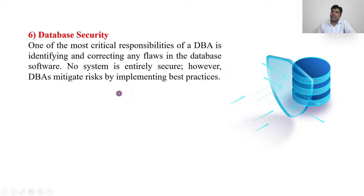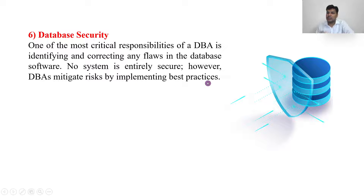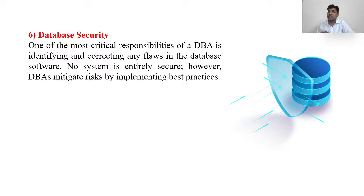Database security: the DBA identifies and corrects any flaws in the database software. No system is entirely secure; however, the DBA takes risk mitigation steps by implementing best practices. He will try to recognize unrecognized sites, or when a different user is trying to access from a suspicious location — he will shield the database by not giving access to unrecognized people or unrecognized IP addresses. That is how the DBA provides security.